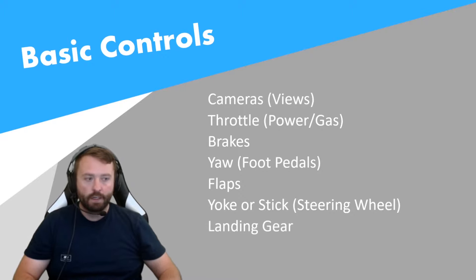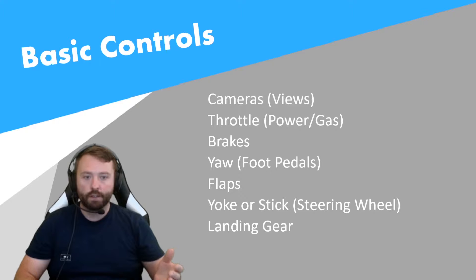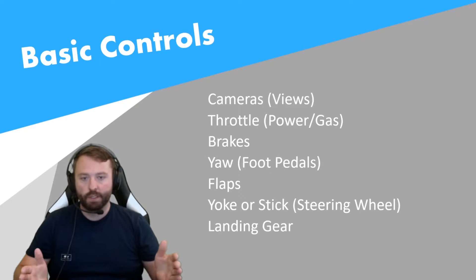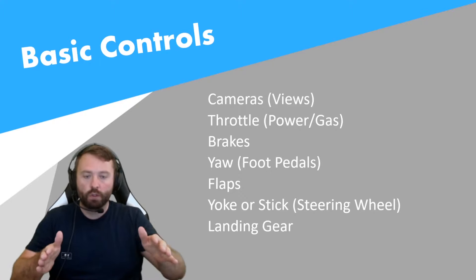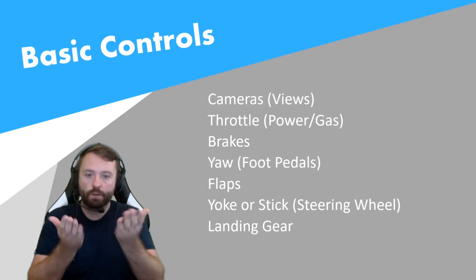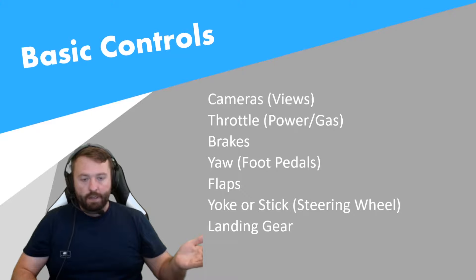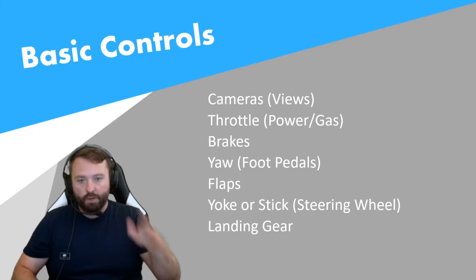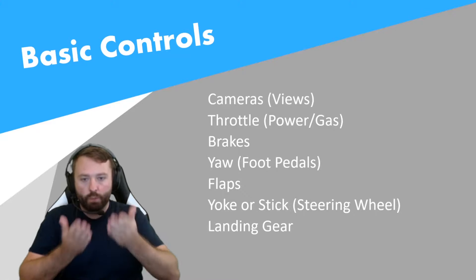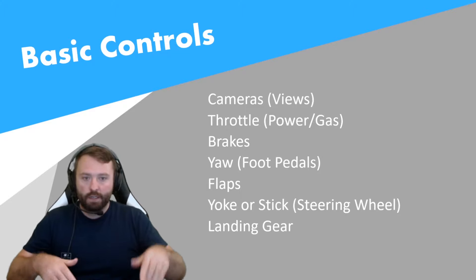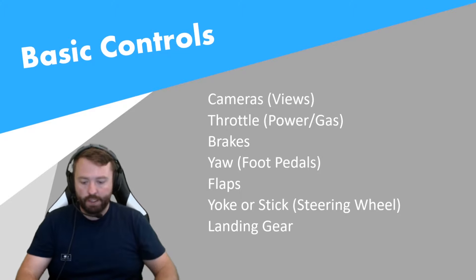Landing gear — this is something that is only on certain aircraft like the big ones. Every aircraft has landing gear, but some have retractable landing gear so they'll come up into the airplane. Knowing that button will help you — when you're flying, bringing in the landing gear makes you fly faster; when you bring it down it slows you down and prepares you for landing.